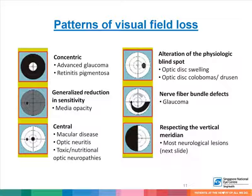Different patterns of visual field loss can point to different etiologies. Concentric visual field loss, where peripheral field loss is greater than central field loss, is seen in advanced glaucoma or retinitis pigmentosa. Generalized reduction in sensitivity across the entire visual field can be seen in media opacities. Central visual field loss adjacent to or independent of the blind spot can be seen in macular diseases, optic neuritis, or toxic nutritional optic neuropathies. Alteration of the physiological blind spot can be seen in optic disc swelling, colobomas, or drusen. Nerve fiber bundle defects, also referred to as arcuate scotomas, can be seen in glaucoma. Visual field defects that respect the vertical meridian are most commonly neurological in origin and are critical to recognize.